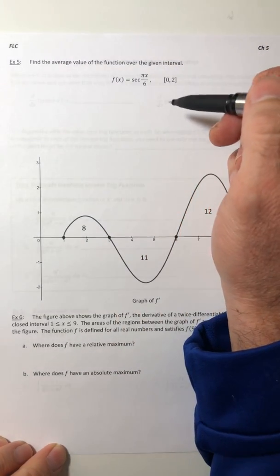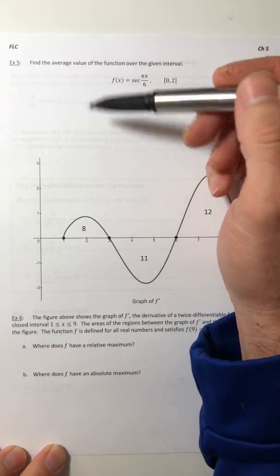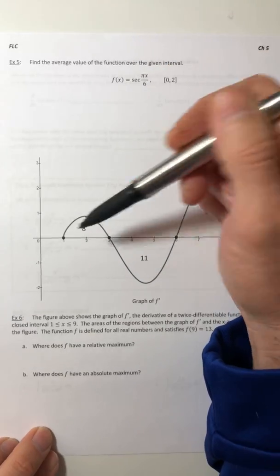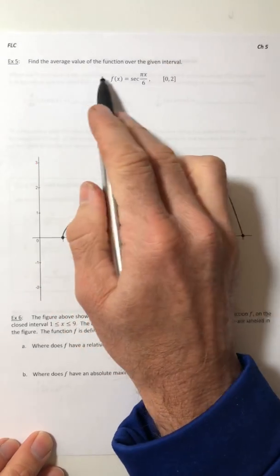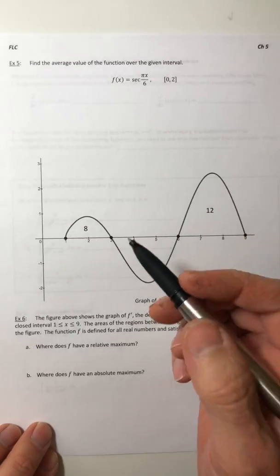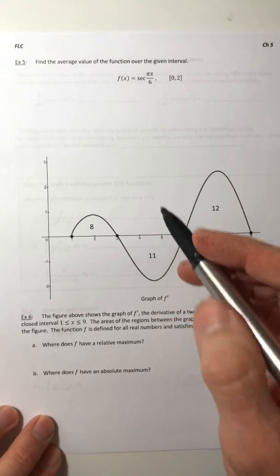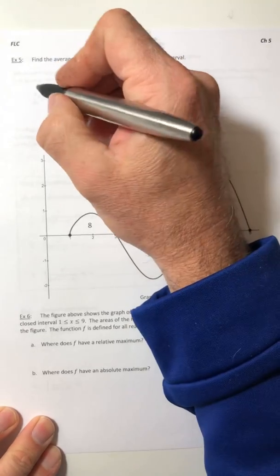Okay, this last video in section 5.7. We're going to look at one average value and then two, kind of an application or critical thinking question. So average value of this function from 0 to 2. We haven't done an average value for a little bit, so let's do one now.